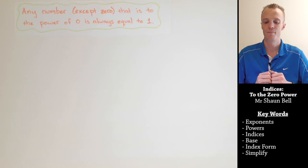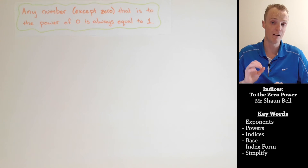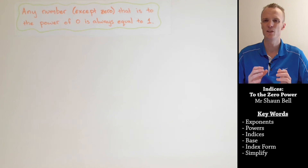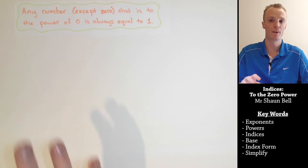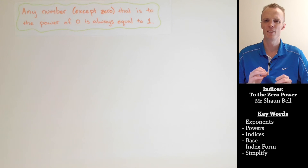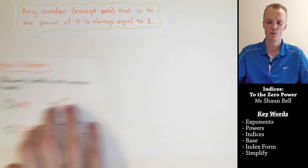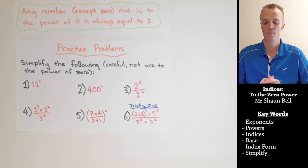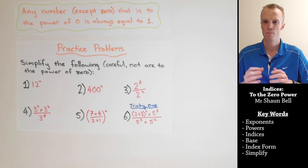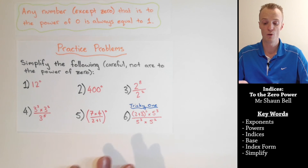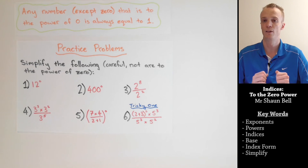So let's recap: any number except zero that is to the power of zero is always equal to one. You might be wondering about the exception of zero — that's something I want to cover at a later stage. For now, I want you to practice some problems. Here are six problems to simplify, but be very careful because not all of them will end up to the power of zero.